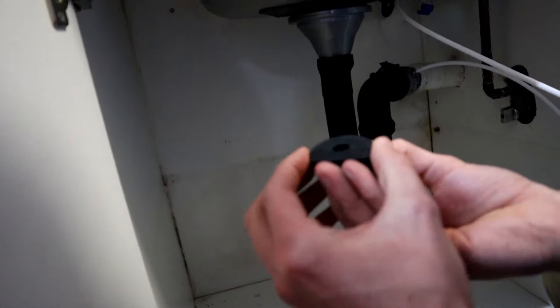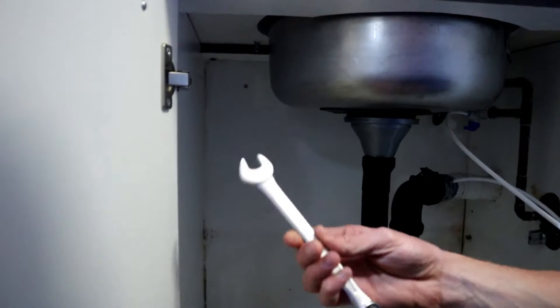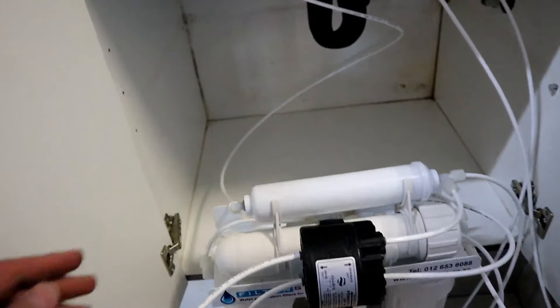Then you can fasten it from underneath. Make sure the thread is clear. Put all the bits together: the rubber, the plastic, the little metal bit, and then the nut. Tighten it with the spanner.